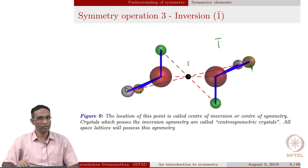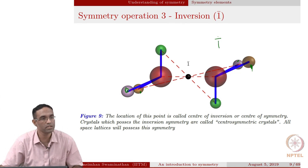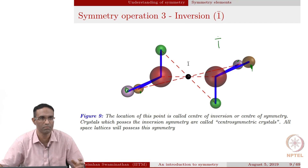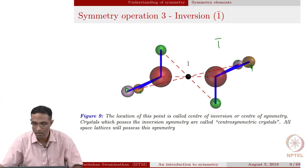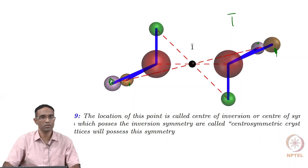The symmetry element for inversion is represented by one-bar. What is the symbol for the mirror? Just m. What is the symbol for the axis of rotation? X, or the n-fold: 2, 3, 4, or 6. These symbols are called the Hermann-Mauguin symbols. We will introduce those symbols in a little bit — that is a much more useful way of talking about symmetry operators.